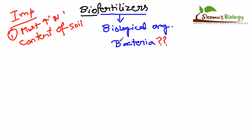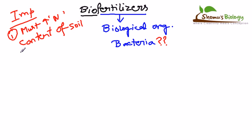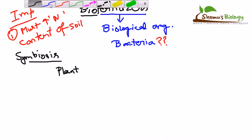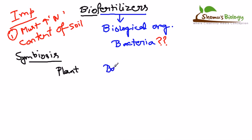To understand this concept we need to learn a basic concept of biology called symbiosis. Symbiosis is simply the relationship of two different organisms in ecology or an ecosystem in which both organisms are benefited. For example, a plant is there, and a bacteria resides in the root region — the rhizosphere region — of the plant. The plant supplies major nutrients to the bacteria.